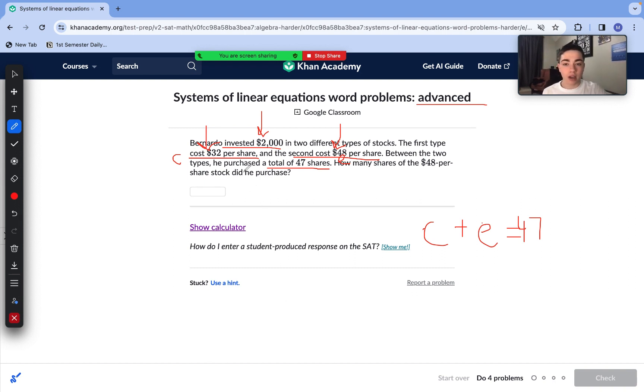Now with our dollar equation, we have 32 for our cheap stock plus 48 for our expensive stock, and this equals $2,000. Now we can just solve the systems of equations. We're trying to find E. So in order to find the variable E, we need to isolate variable C in this first equation and then substitute it out. Subtract E from each side so C equals 47 minus E.